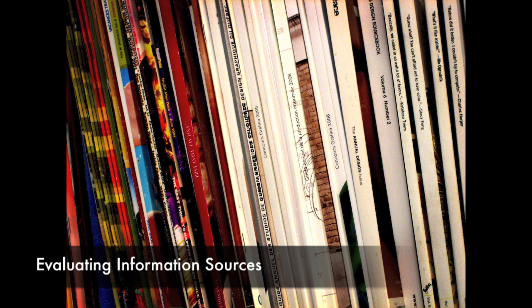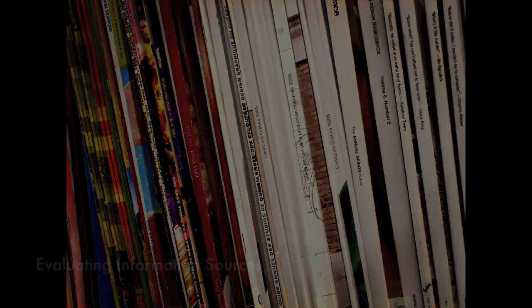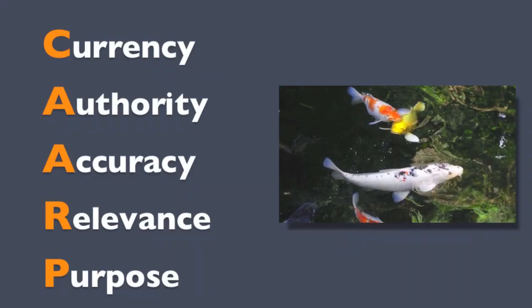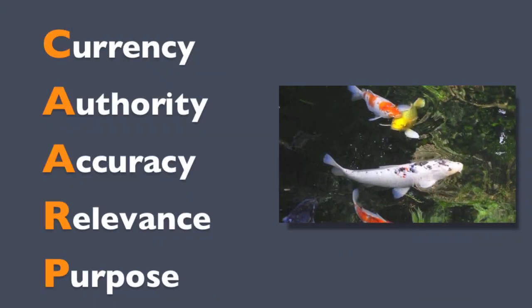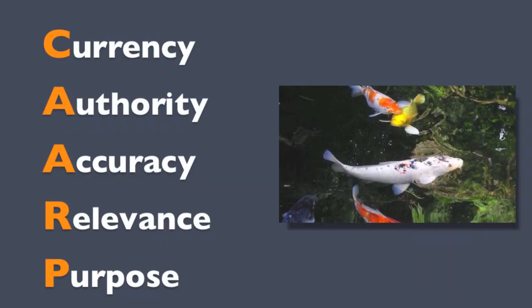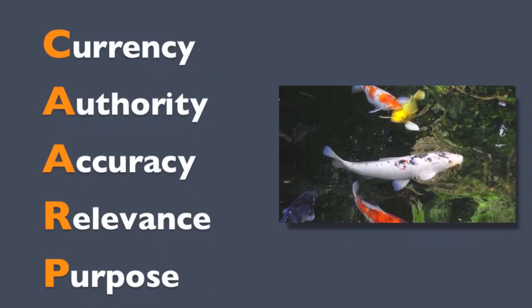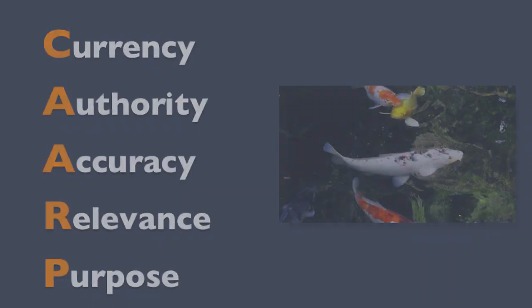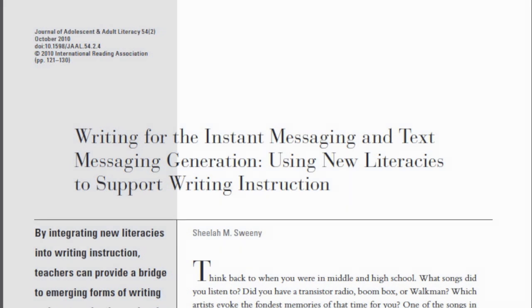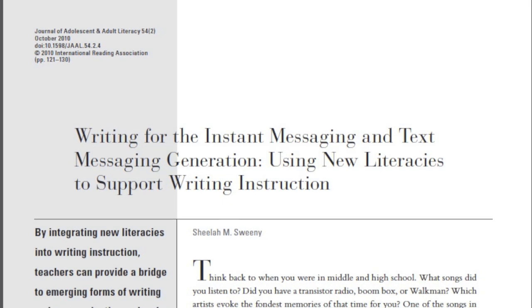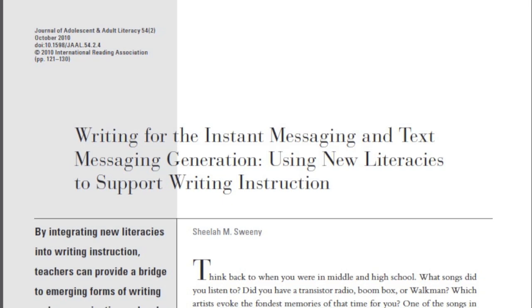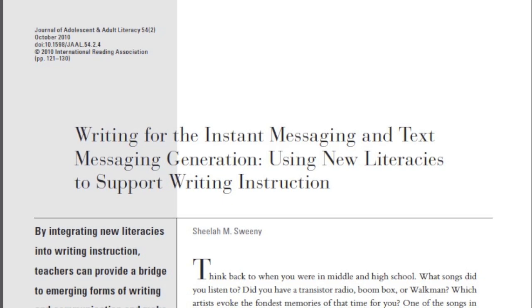When evaluating a source, there are several different criteria you should check for. An easy way to remember that criteria is the acronym CARP — Currency, Authority, Accuracy, Relevance, and Purpose. Let's go through each one of these criteria while looking at a sample journal article.